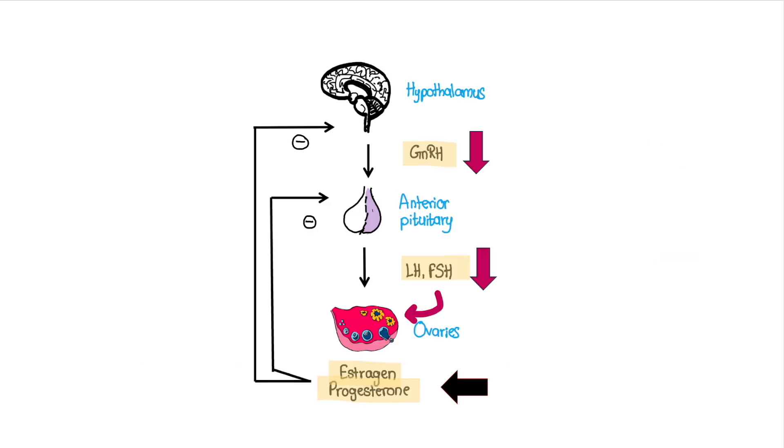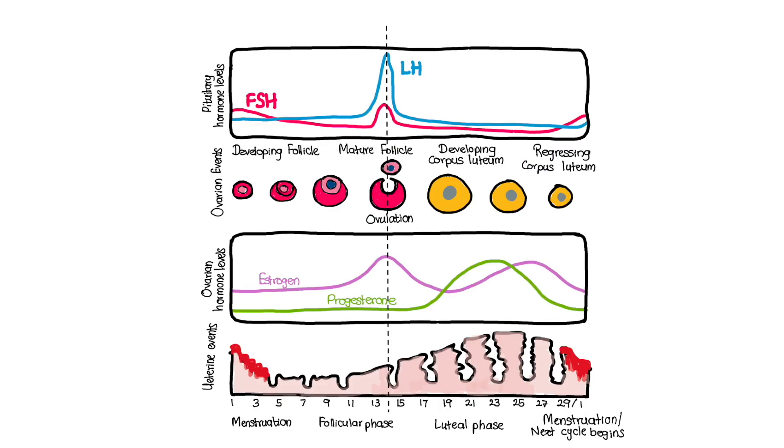Estrogen and progesterone inhibit the release of gonadotropin-releasing hormone from the hypothalamus. Gonadotropin-releasing hormone is a key hormone that stimulates the pituitary gland to release FSH and LH. Estrogen and progesterone also inhibit the secretion of FSH and LH from the pituitary gland. This negative feedback mechanism ensures that hormone levels remain within a certain range, preventing excessive stimulation of the ovarian follicles and regulating the time of ovulation and menstruation.